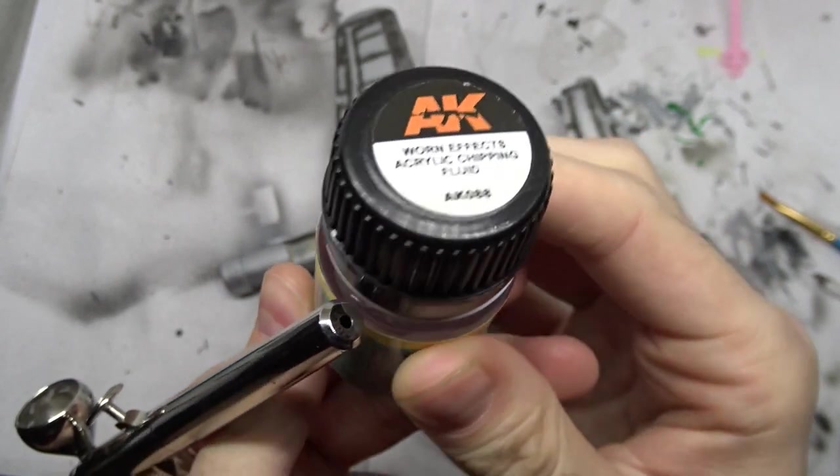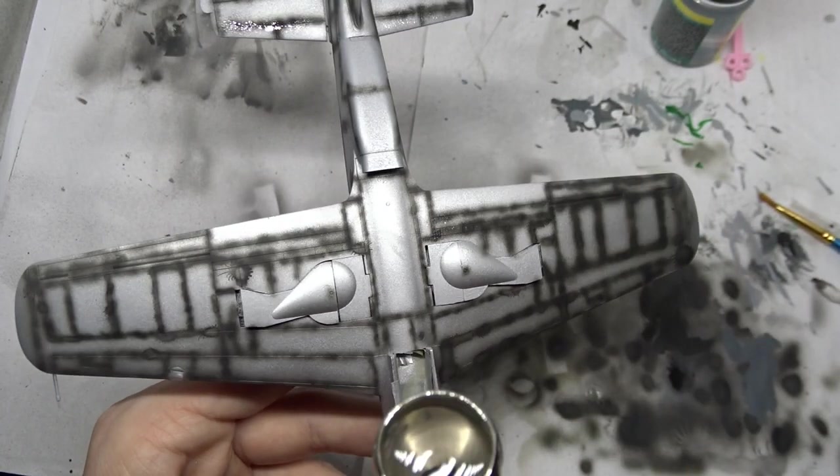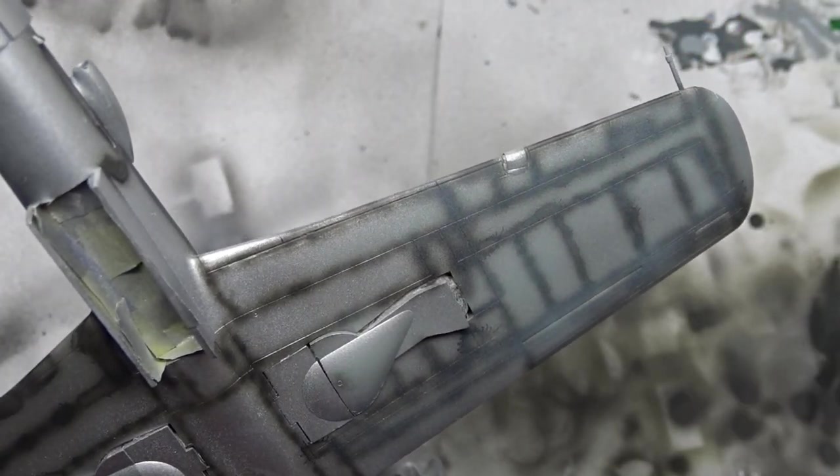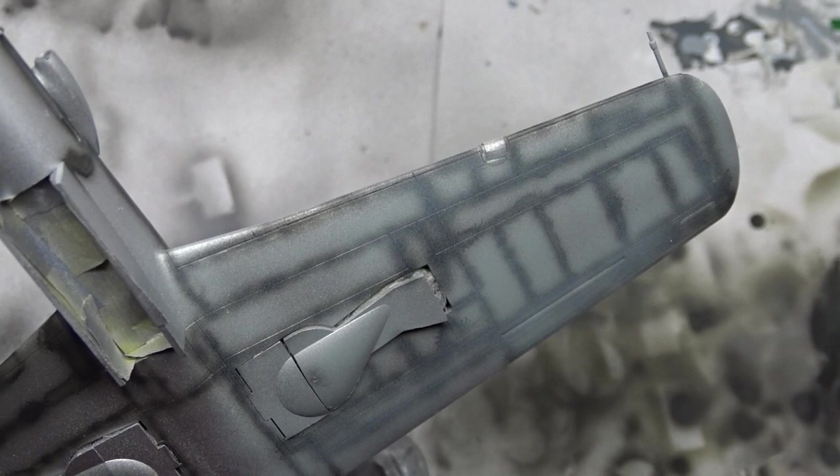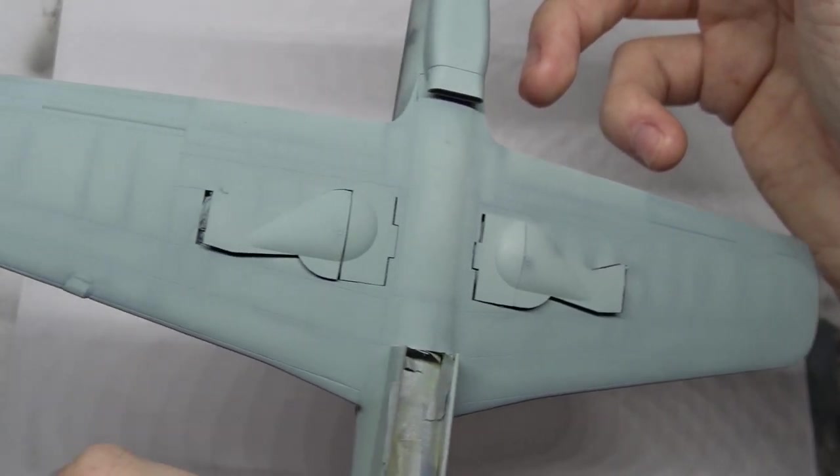Up next I sprayed the aircraft with AK Interactive Worn Effects, which is a chipping fluid. I used RLM 65 Light Blue from Hataka to paint the underside in thin coats, so the pre-shading is still slightly visible.